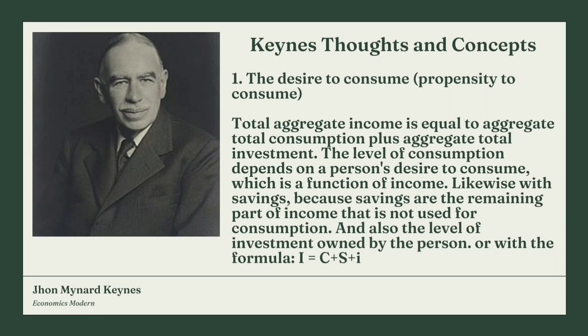Next are Keynes' thoughts and concepts. Number one: the desire to consume, or propensity to consume. Total aggregate income equals aggregate total consumption plus aggregate total investment. The level of consumption depends on the person's desire to consume, which is a function of income, likewise with savings, because savings are the remaining part of income not used for consumption, plus the level of investment, represented by the formula C plus S plus I.